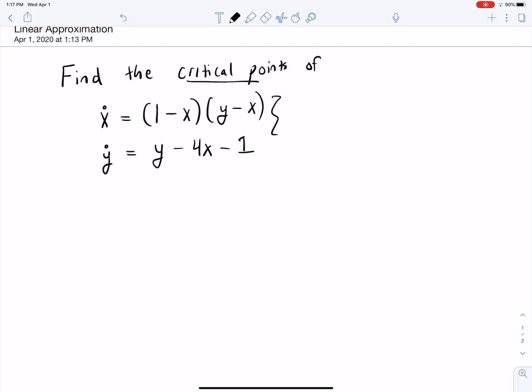So you'll hear in class sometimes I'll call critical points equilibrium points or fixed points. Those all mean the same thing and the idea is that at those points if you start there you'll remain there forever. So critical points are points where the derivative with respect to time, so that's our x dot y dot here, is equal to zero.